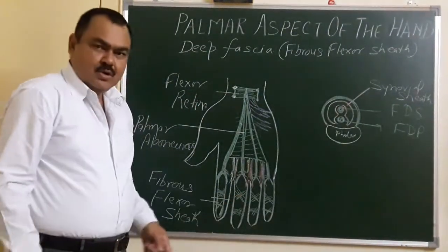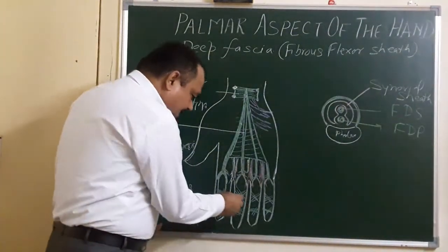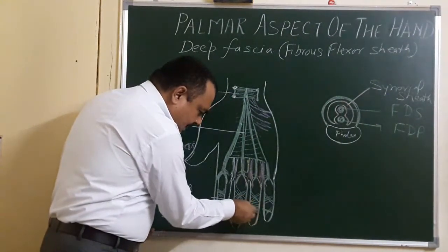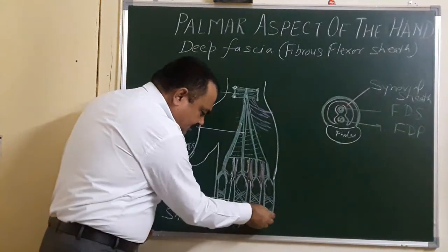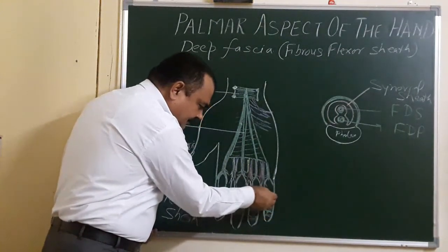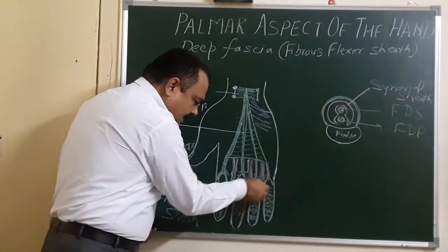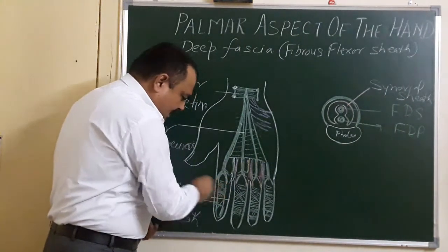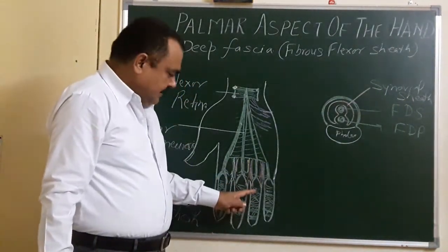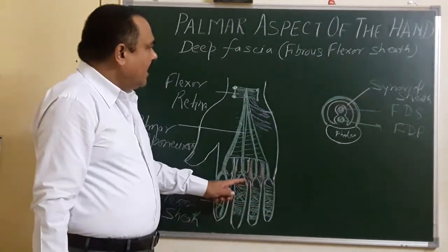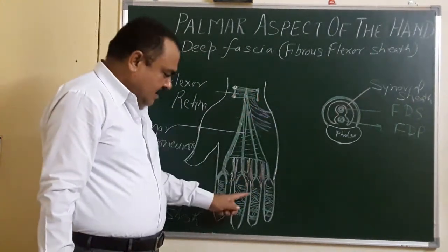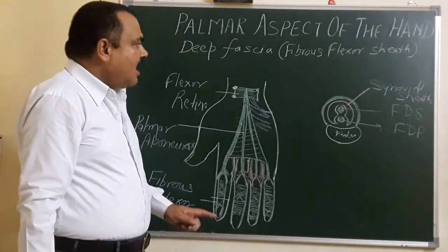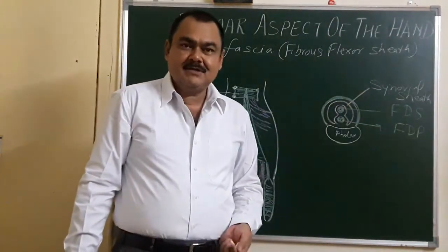Between the two cruciate arrangements, the fibers form a thick layer of annular fibers. So in between the cruciate arrangements, there is a thick layer of annular fibers. This is the arrangement of the fibers of the fibrous flexor sheath: cruciate arrangement and annular arrangement.